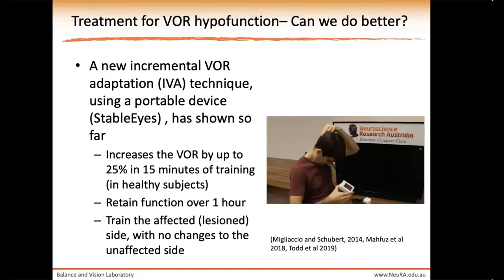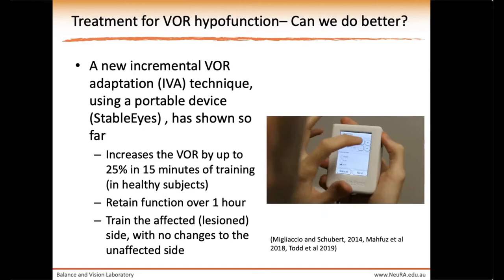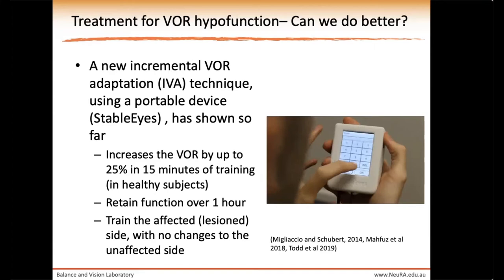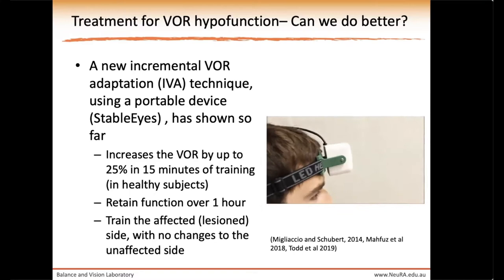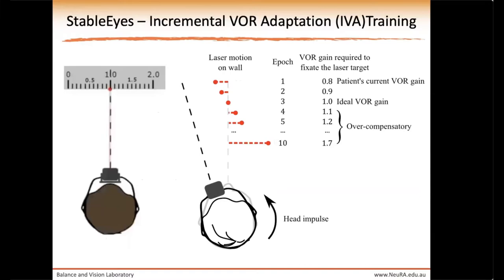Recent papers from our lab have shown both light contrast and head frequency to significantly affect VOR adaptation. Our lab, in conjunction with Johns Hopkins University in Baltimore, has developed a new take-home rehabilitation device called StabilEyes — a programmable unit using a different set of gaze stabilising exercises called incremental VOR adaptation, or IVA. In initial pilot and healthy sample studies, we demonstrated we can boost or adapt the VOR by as much as 25% in 15 minutes of training, retain the benefits for at least an hour, and selectively target only the affected side.